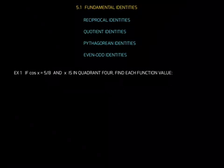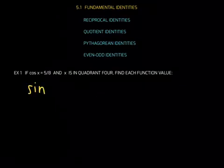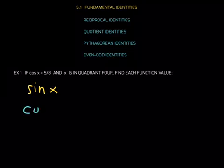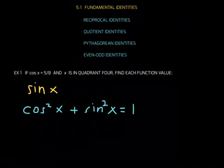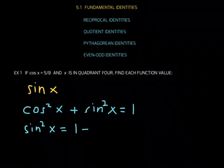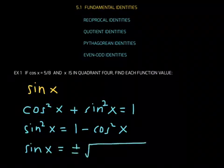Example number one: if cosine of x is equal to 5/8 and x is in quadrant 4, find each function value. They want you to find sine of x. You know cosine of x is 5/8, so what is sine of x? The identity we'll use is the Pythagorean identity: cosine squared of x plus sine squared of x is equal to 1. Solving for sine of x, sine squared of x equals 1 minus cosine squared of x. Taking the square root, sine of x equals plus or minus the square root of 1 minus cosine squared of x.